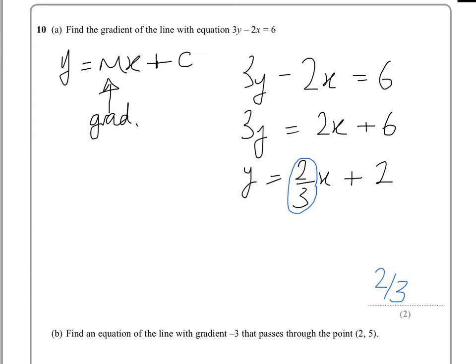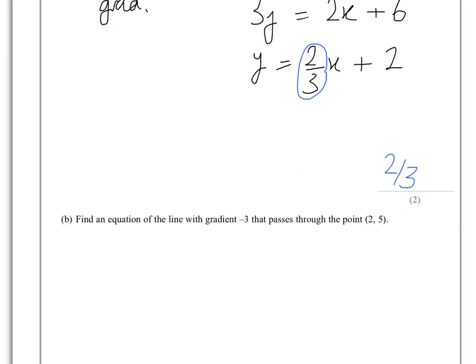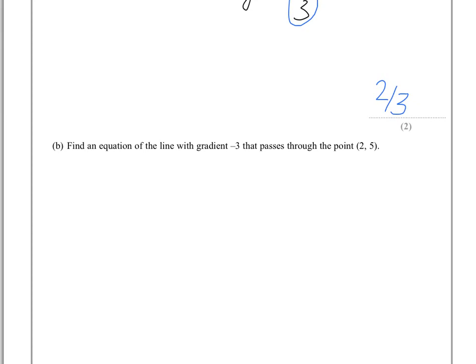In part b, we're asked to find an equation of the line with gradient minus 3 that passes through the point 2, 5. Again, keep the original equation of a straight line in mind, y equals mx plus c. Now we know the gradient is minus 3, so we've already got one part, the m. So we know it's going to be y equals minus 3x plus c.